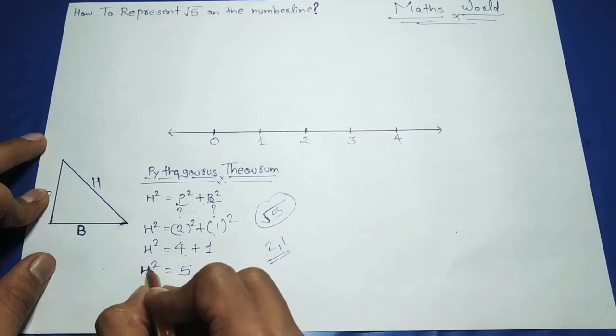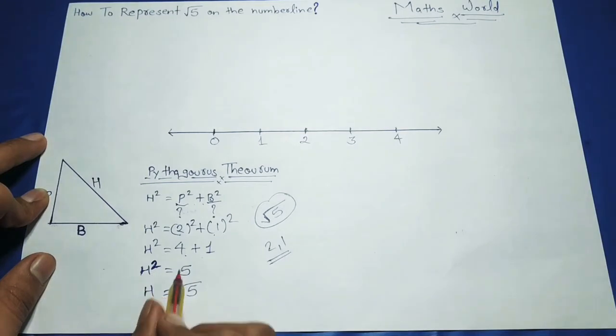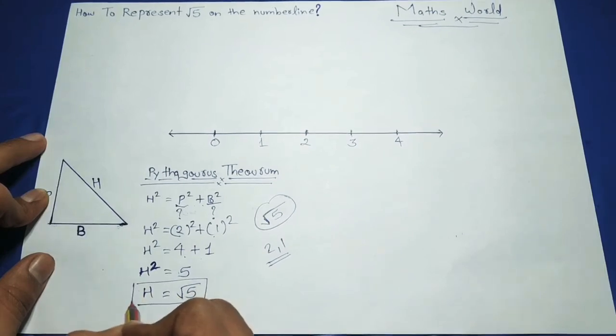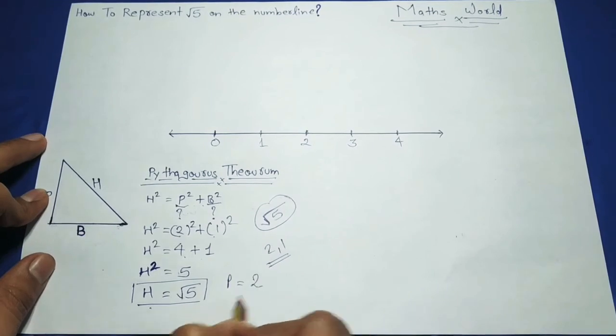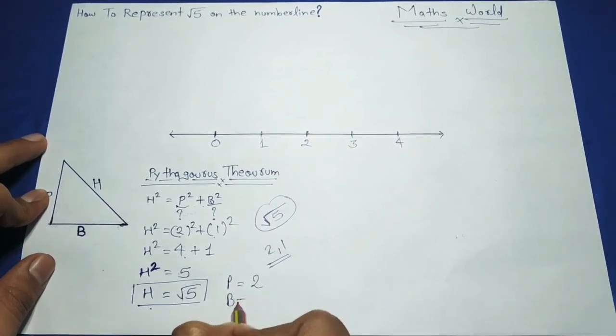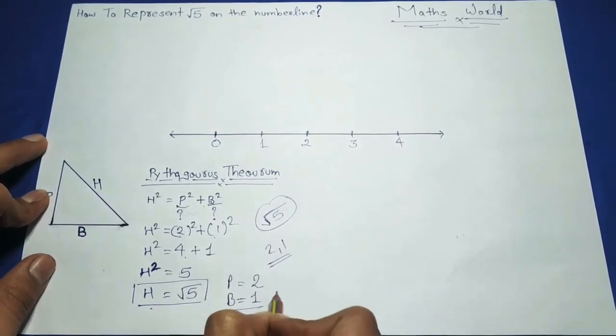Because H square equals 5, when it shifts to the right side, it will convert to square root. So as we saw that H equals square root 5, and P equals 2 and B equals 1, it was correct.